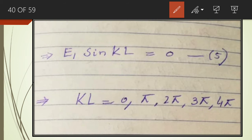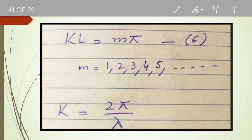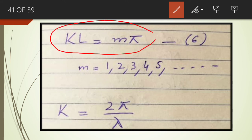sin(KL) equals zero when KL equals 0, π, 2π, 3π, 4π, and so on. In general, sin(KL) equals zero when KL equals mπ, where m equals 1, 2, 3, 4, 5, and so on.